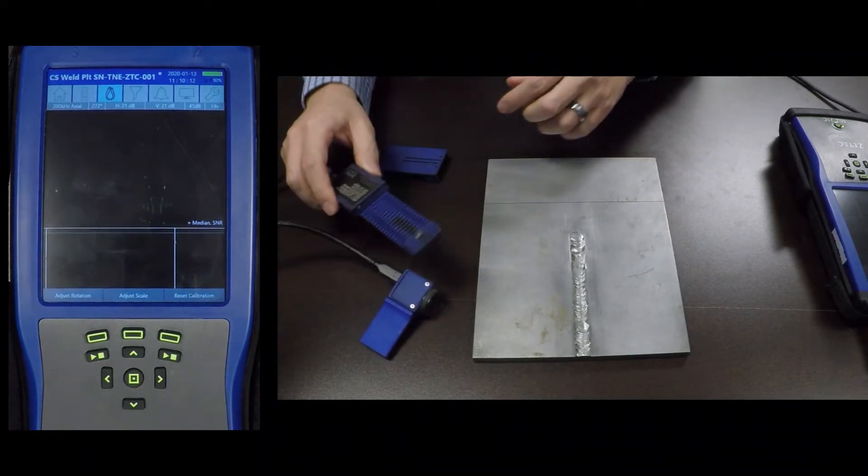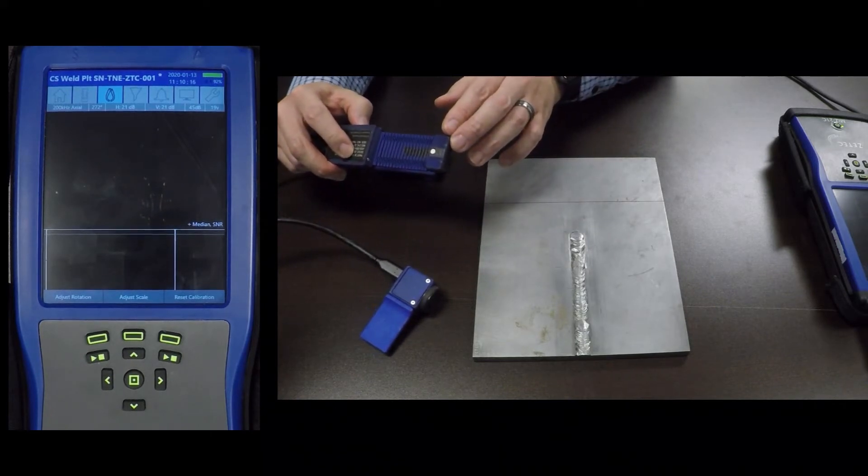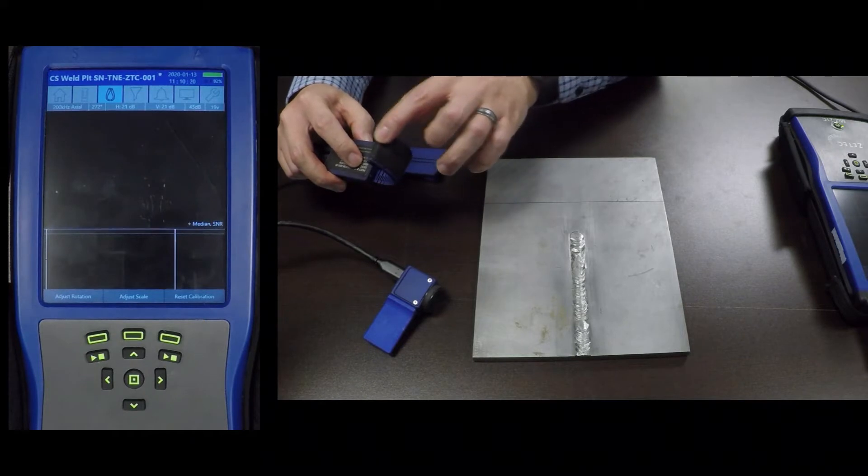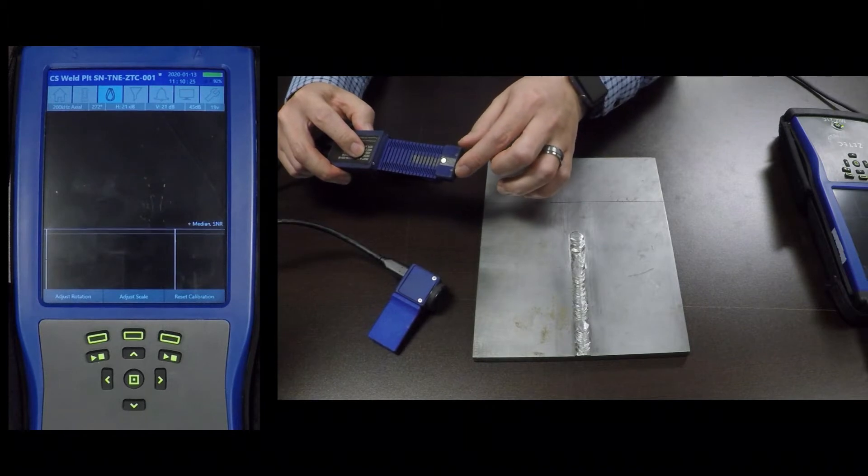I will scan this weld with the surface weld probe. This probe is a flexible array probe with two plus points at the end.